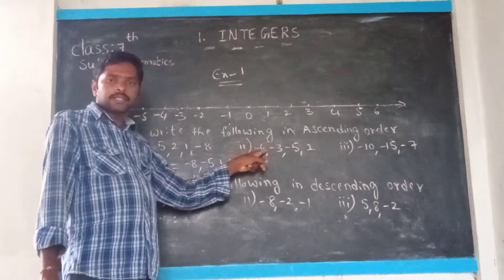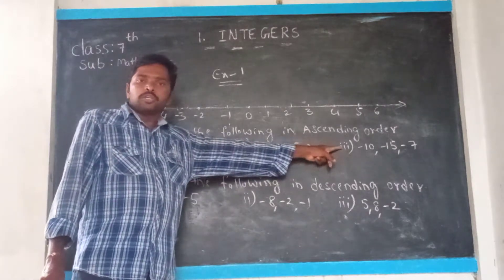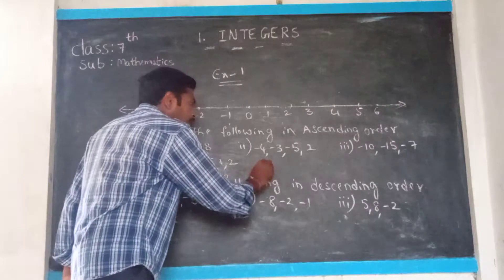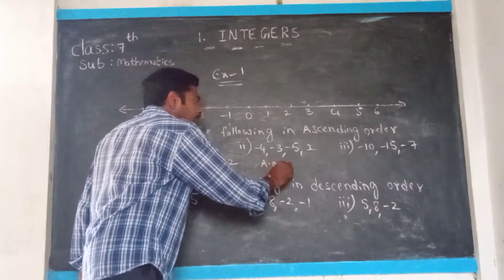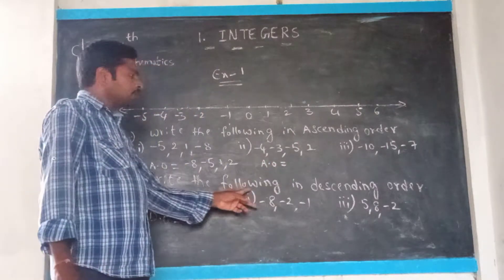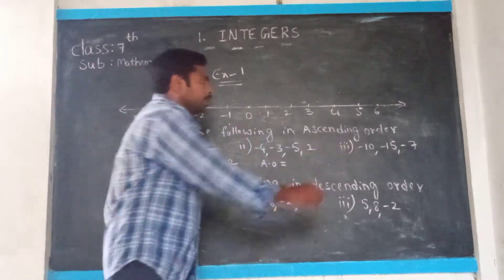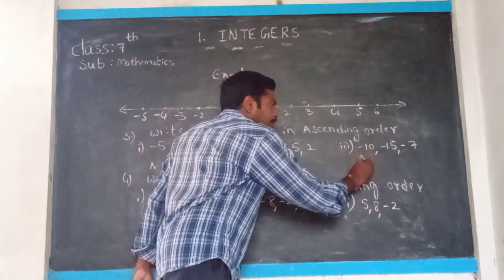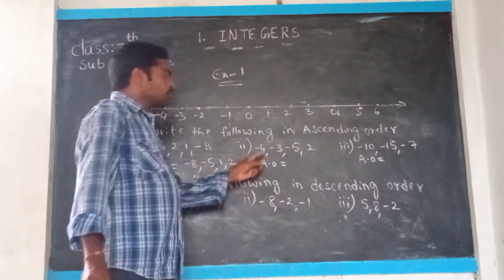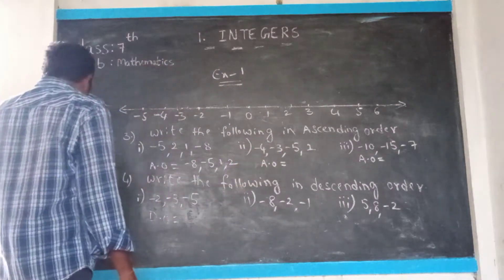Like that, you are given the second sum and third sum — you also write like that. Write ascending order and descending order. First you complete these two sums — write in ascending order — small number to big number.